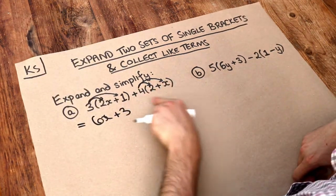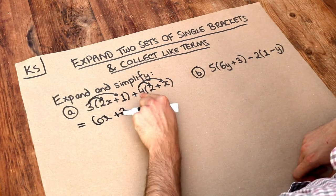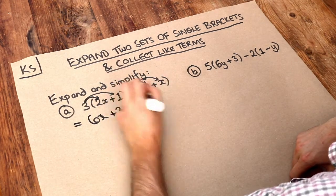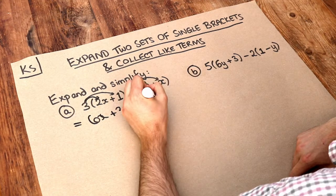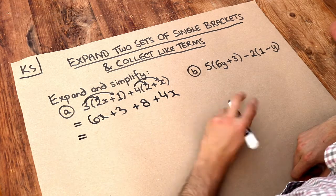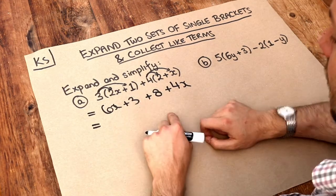And then let's expand out this second bracket. We're adding 4 lots of 2 plus x, so 4 lots of 2, 4 times 2 is 8, and we've got 4 lots of x, that's 4x. Now we've done the expanding bit but now we need to do the collecting of like terms.